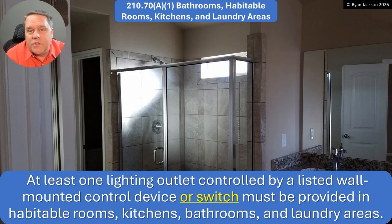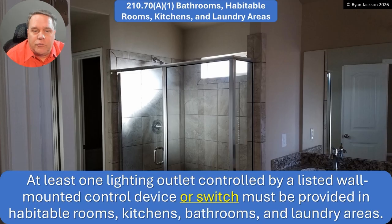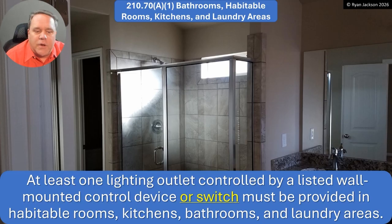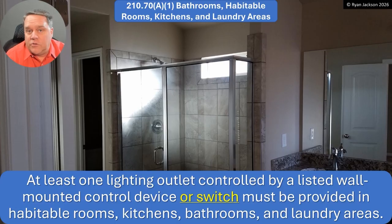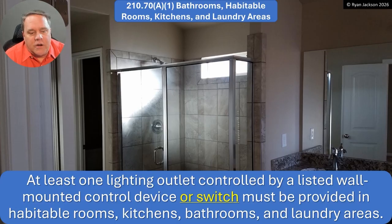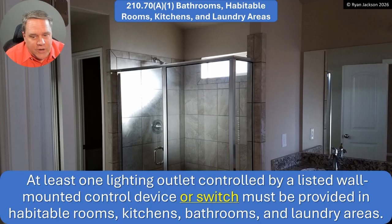A1 talks about your bathrooms, habitable rooms, kitchens, and laundry areas. At least one lighting outlet controlled by a listed wall-mounted control device or switch must be provided in habitable rooms, kitchens, bathrooms, and laundry areas.